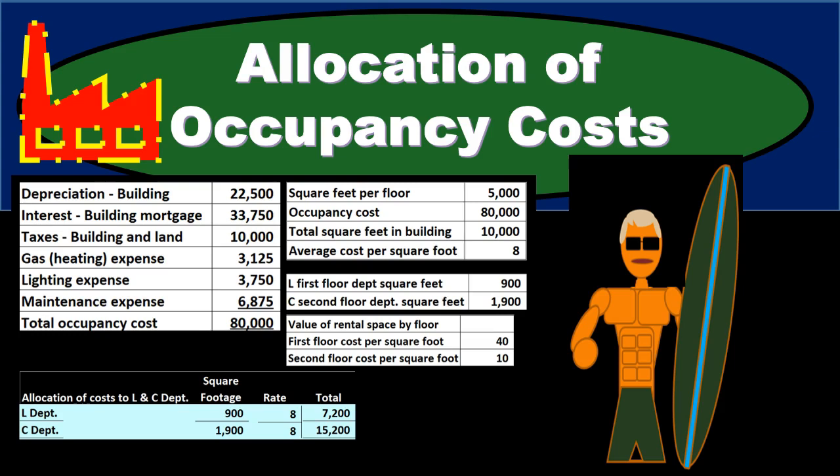In this presentation we'll look at an example of the allocation of occupancy costs. This is a more complex example with a back-and-forth process. Our goal is to allocate the occupancy costs of a building to the departments within it using an activity base. This is not an exact science — there's not a single right or wrong answer. It's a managerial accounting decision-making process that often involves back and forth.